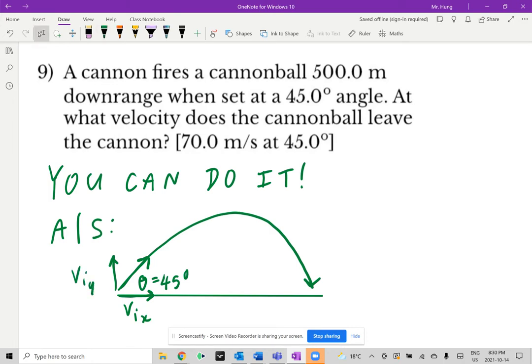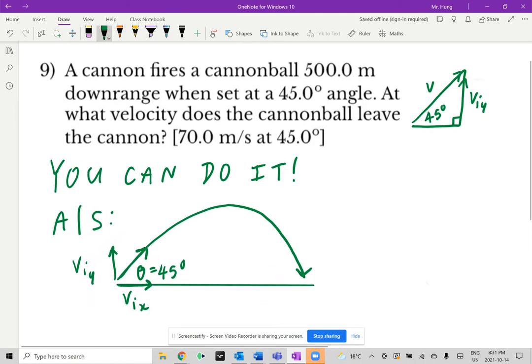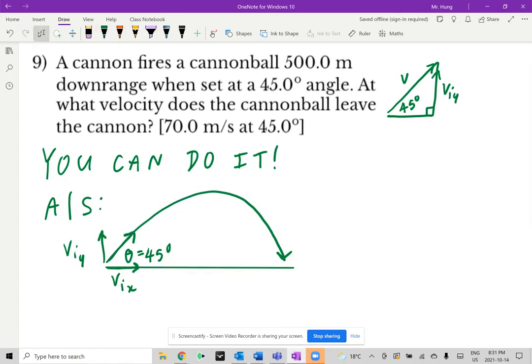Now, if I draw this bigger on the corner for you, here's the right angle triangle. There's the 45 degrees. This is what we're looking for, V. And this is going to be the vertical component, V_i_Y, which equals to V sine of 45 degrees. Likewise, if you look at V_i_X, that's going to be V cosine 45 degrees. And the keyword here is downrange.